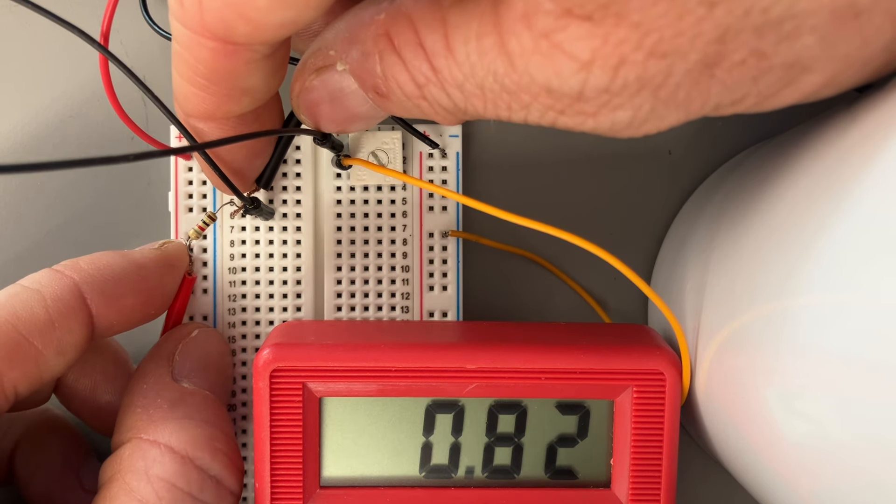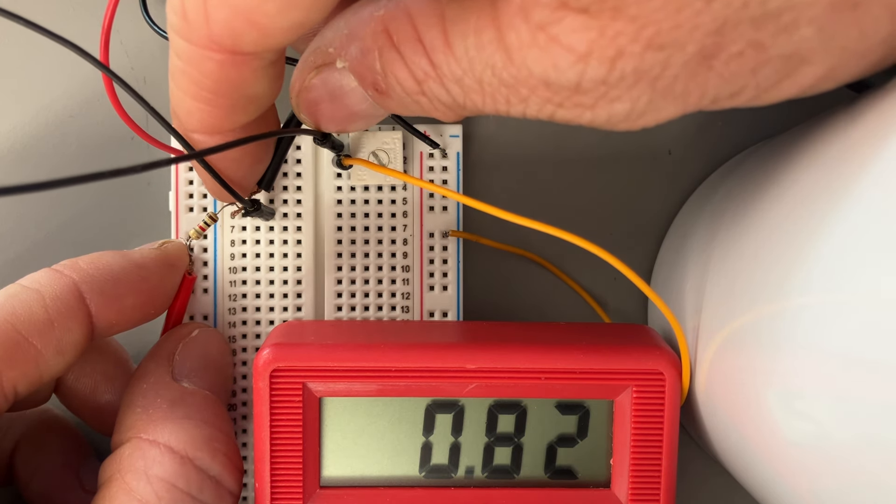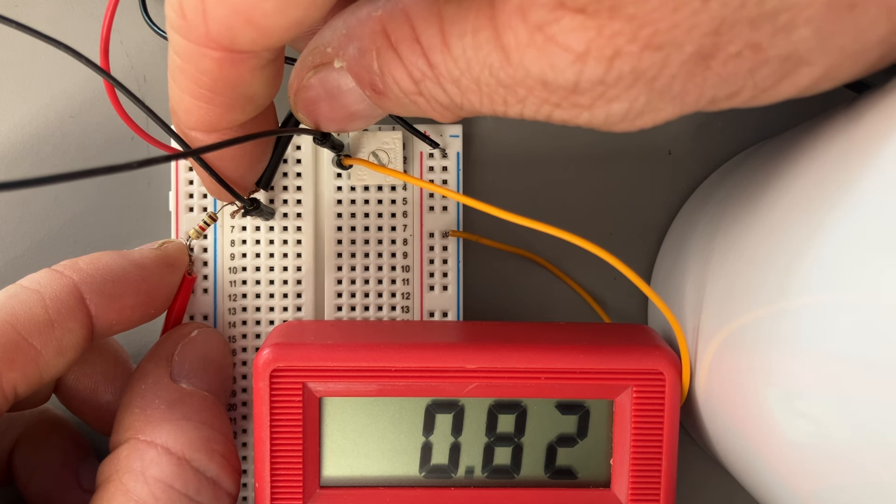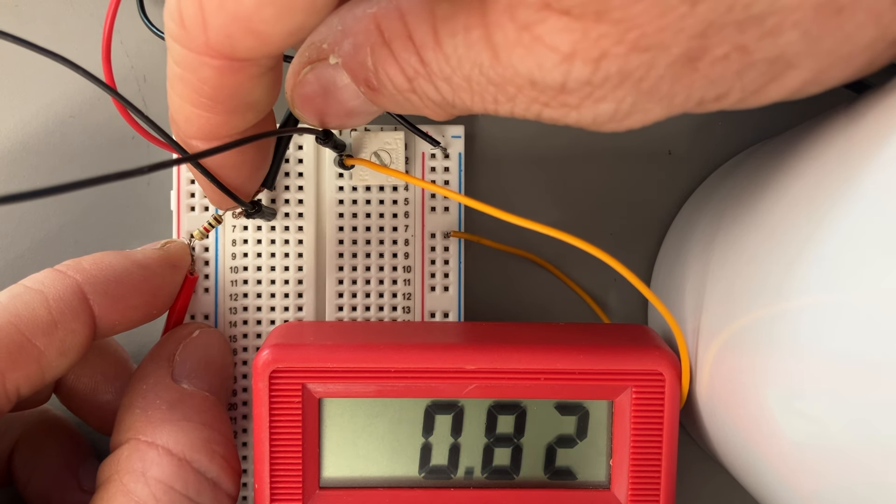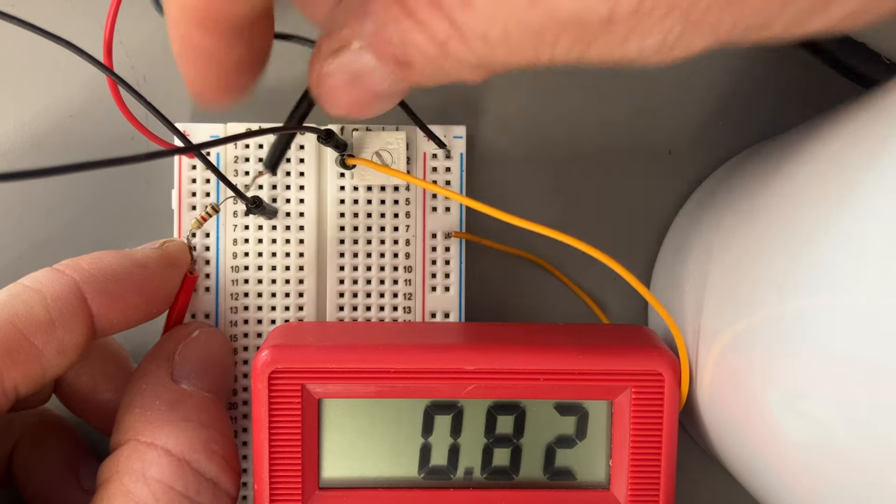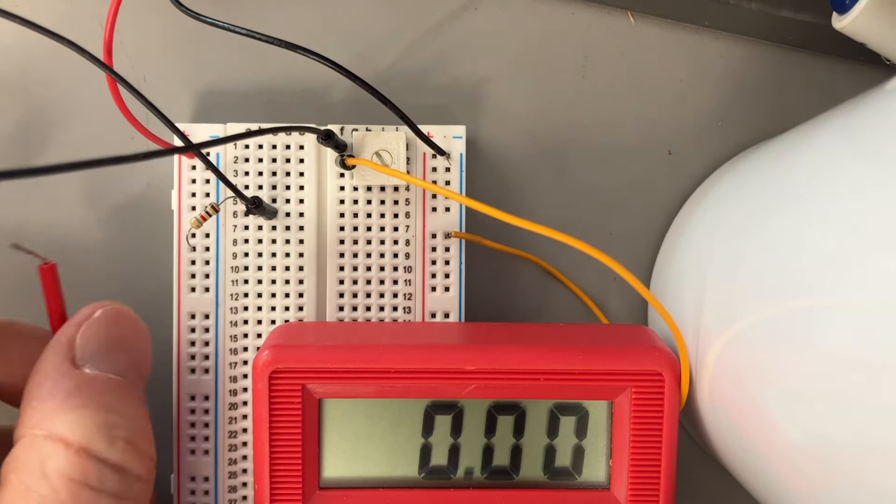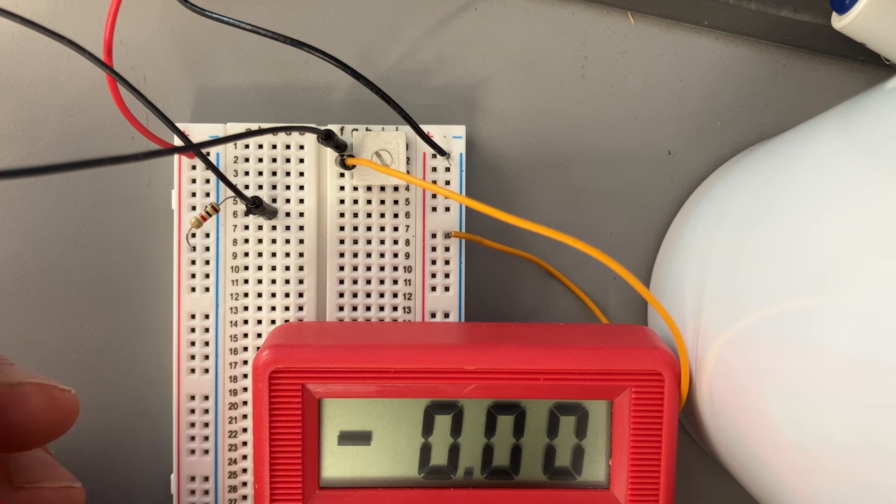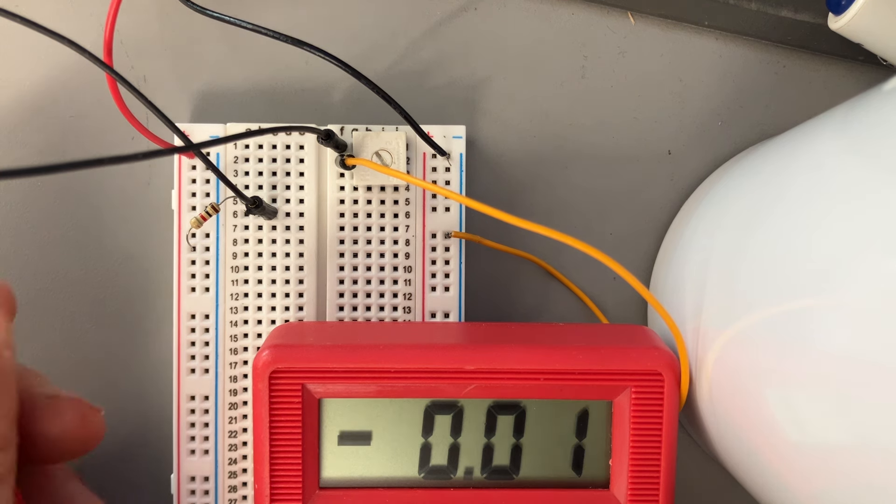It's a little bit higher, 0.82. So that's within our margin of error. If we do some rounding, we're close-ish, especially because these components coming out of the factory are plus or minus 10%. So as long as we're within 10%, it's totally viable.